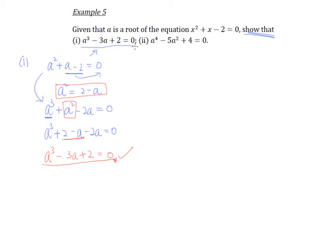we will end up with negative 3a plus 2 equals to 0. And here we go, okay, shown, done. Okay, so that is our part 1. Okay, so let's take a look at part 2,